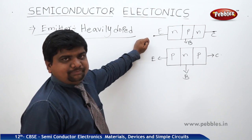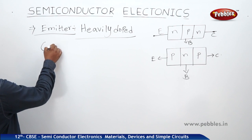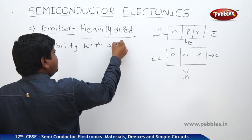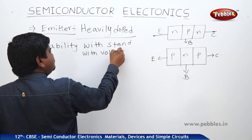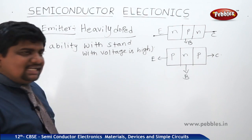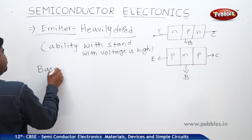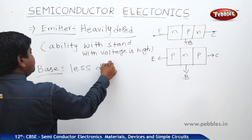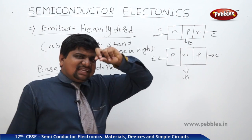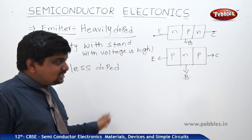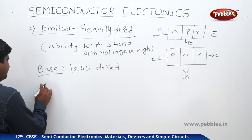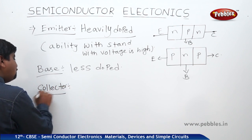Heavily doped means its ability to withstand voltage is high. The base, which is the next part connected to the emitter, is less doped. Because the base has low conductivity, it cannot handle a large amount of voltage and transfers the excess charge to the collector. That is why the collector is moderately doped.